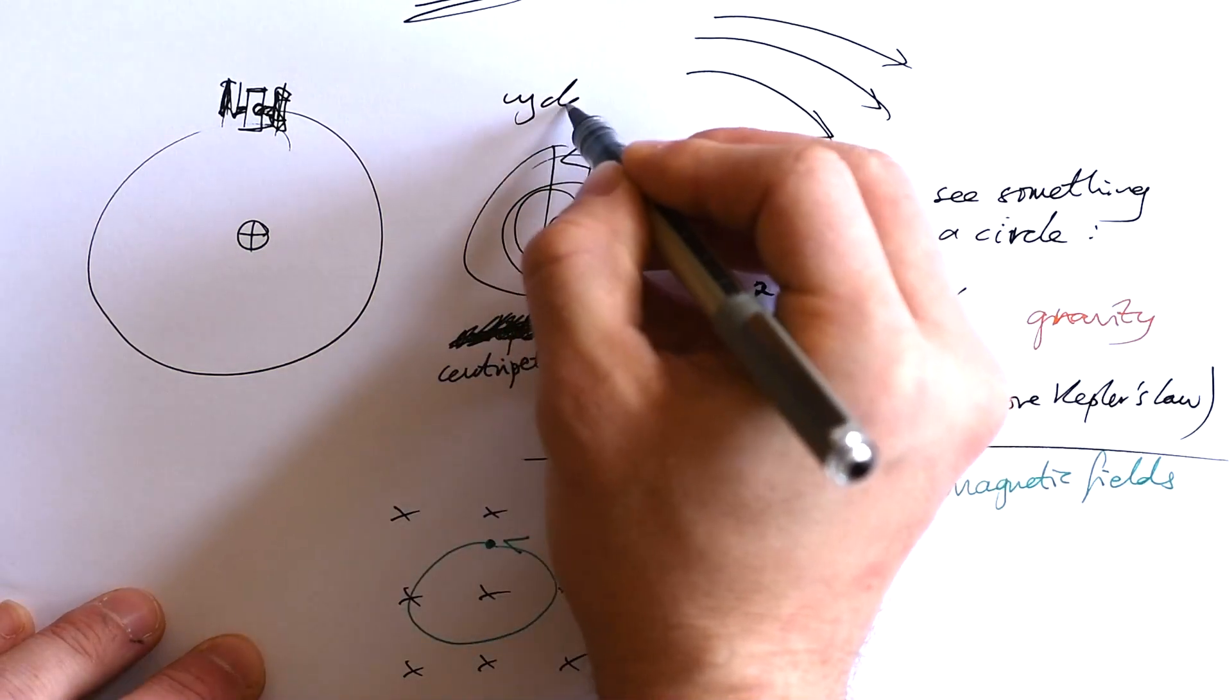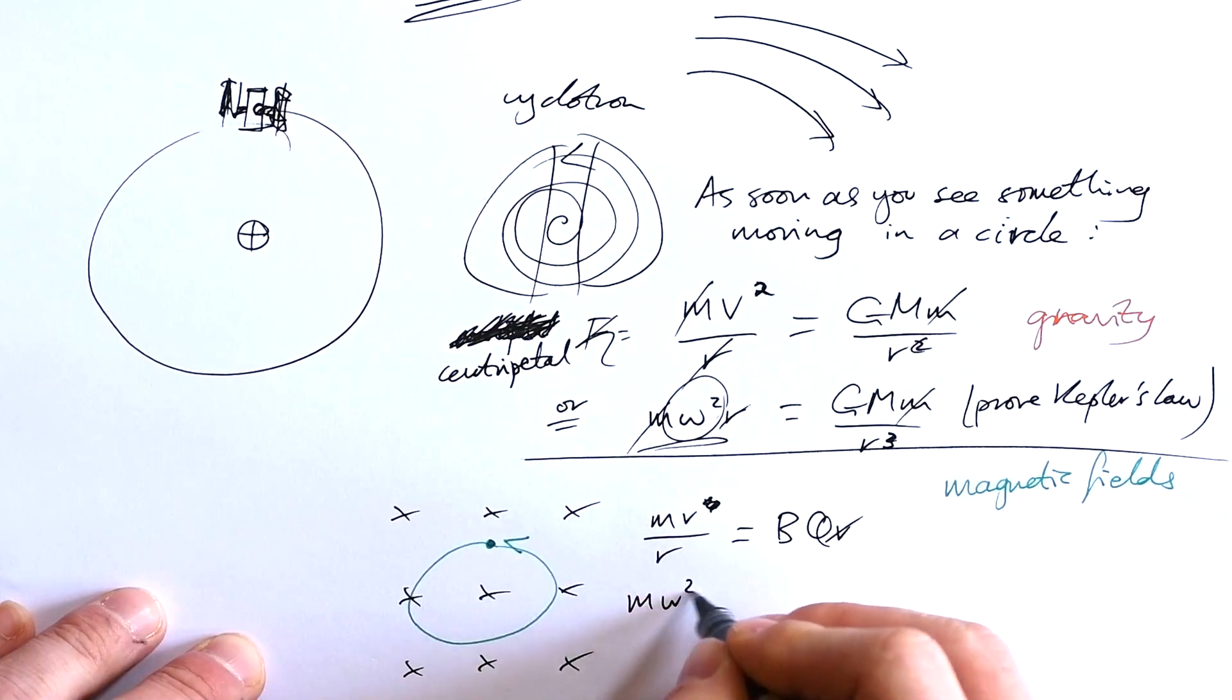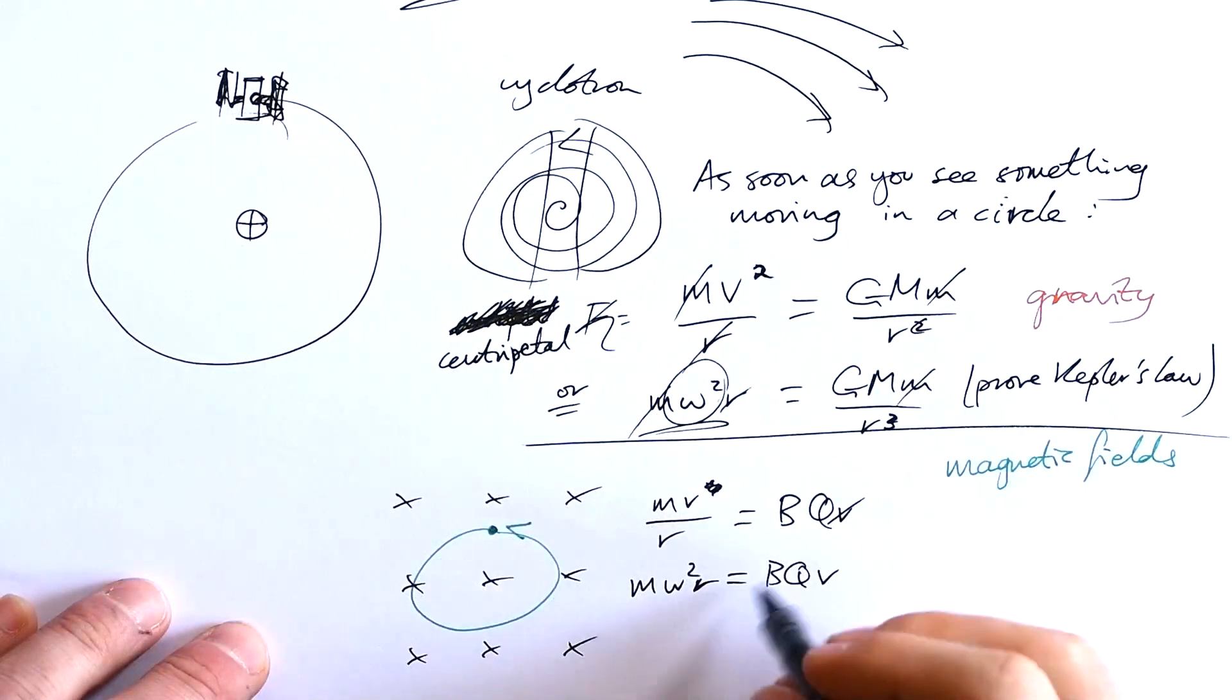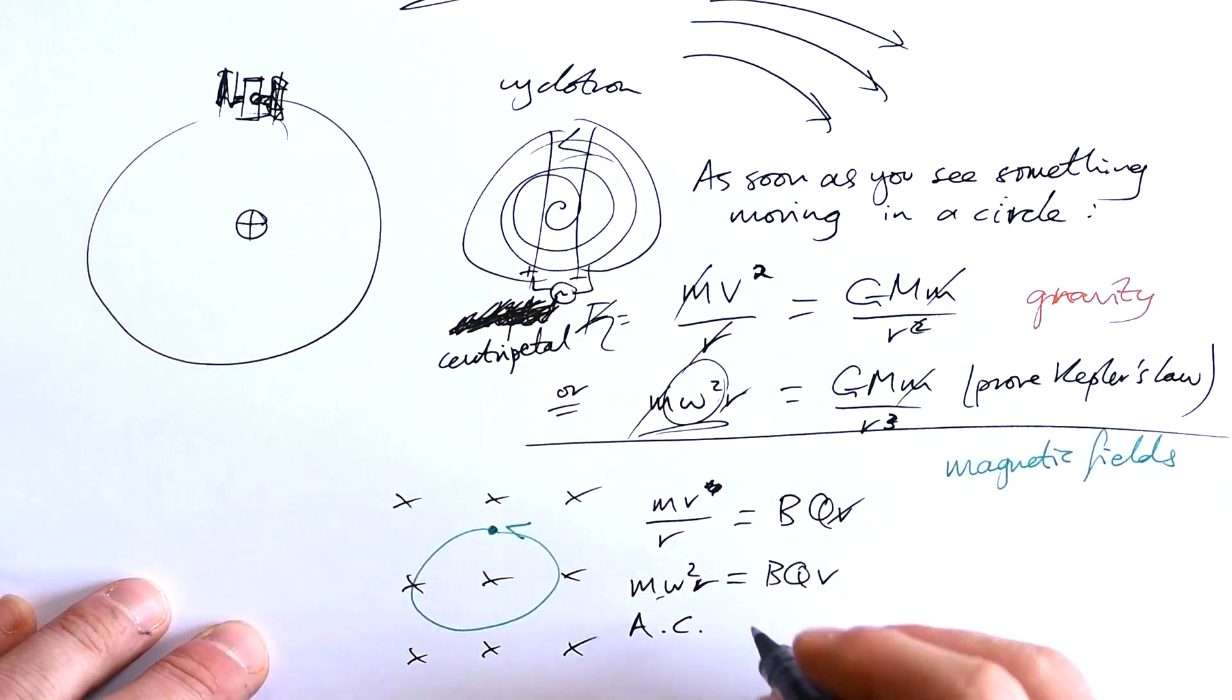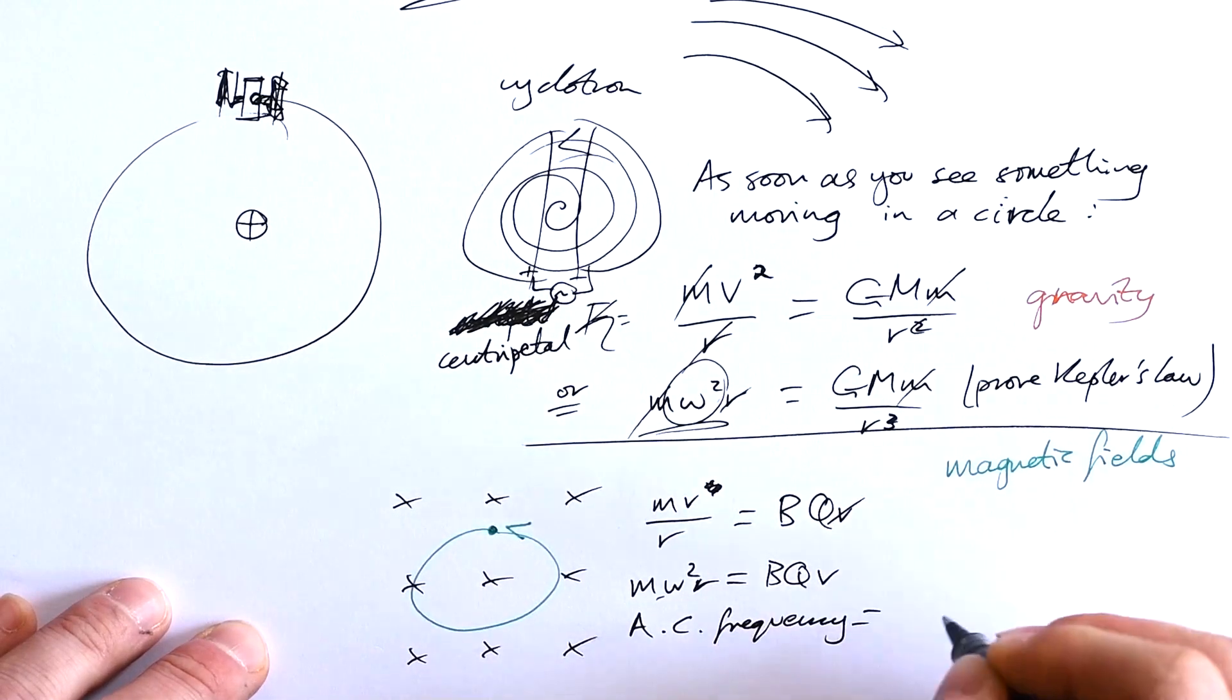If it is a cyclotron like this here, though, we can use m omega squared r. If we're looking for the frequency of what the AC should be, then we can say that, again, omega is 2 pi f. Just remember that the AC that you apply across this cyclotron, positive and negative, and then it switches, AC frequency is equal to frequency of orbit.